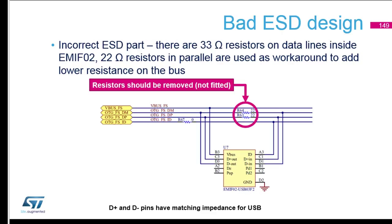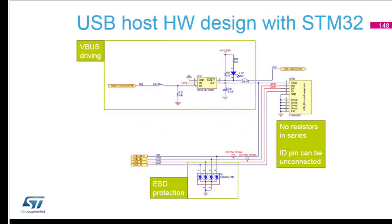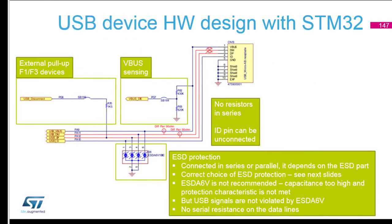Some customers use a design with 22Ω resistors because they see it on our boards, but then combine it with a different ESD protection part — which makes the 22Ω resistors meaningless. This is partly our fault for not documenting it clearly enough. Back to the correct design: the ESD protection used on the Nucleo board is correct from a signal point of view — it does not harm the signal and will work correctly with cables up to 5 meters. I will show oscilloscope measurements later during electrical testing.